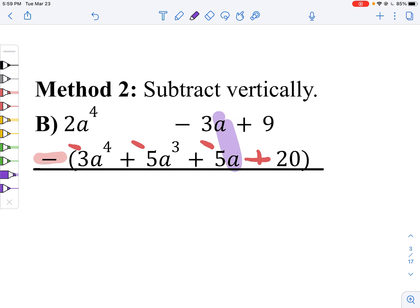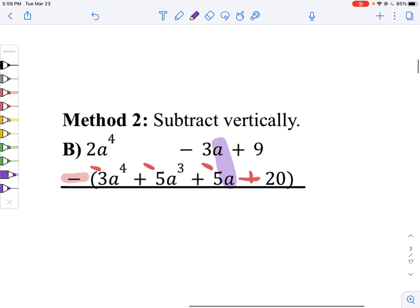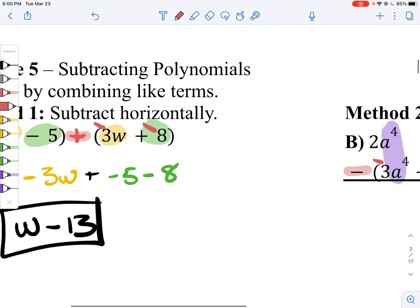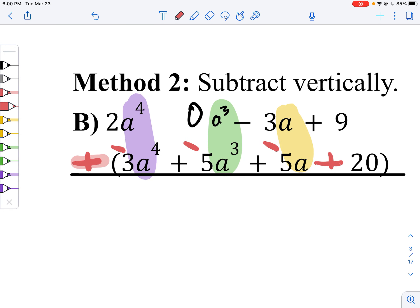So we'll combine our a terms, we'll combine our a to the fourth power, our a cubes, which here remember is 0 a cubed, and our a terms, and our normal numbers. When you distribute your negative, change this to a positive, because we're now adding.